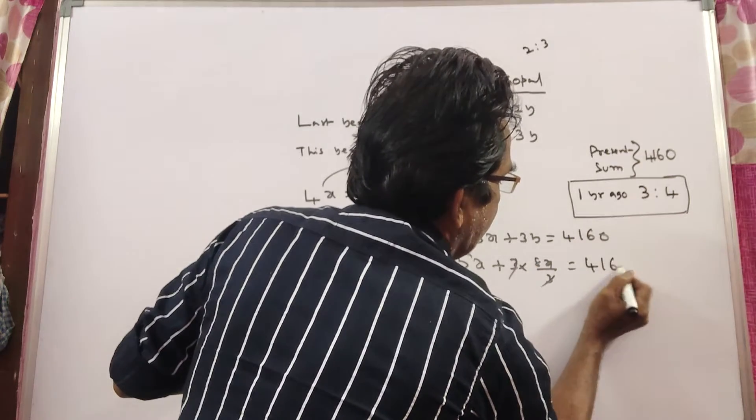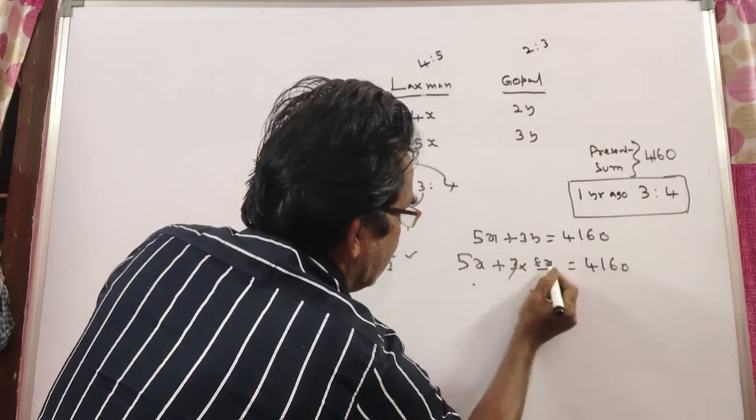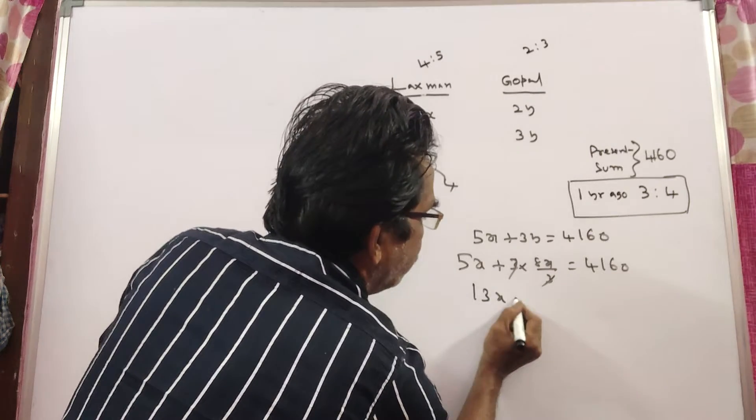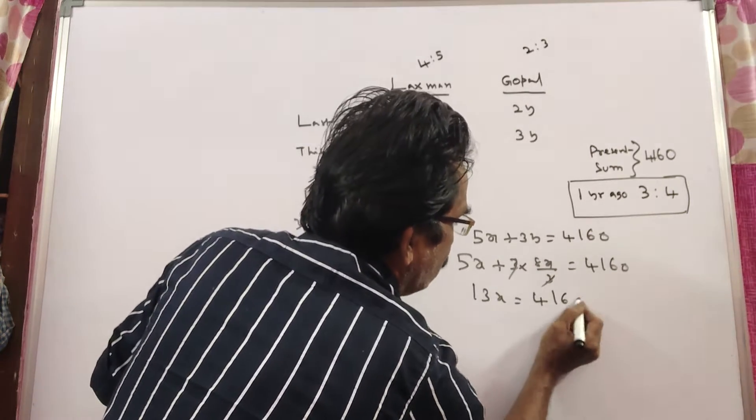3 gets cancelled. 5x plus 8x, 13x. 13x is equal to 4,160.